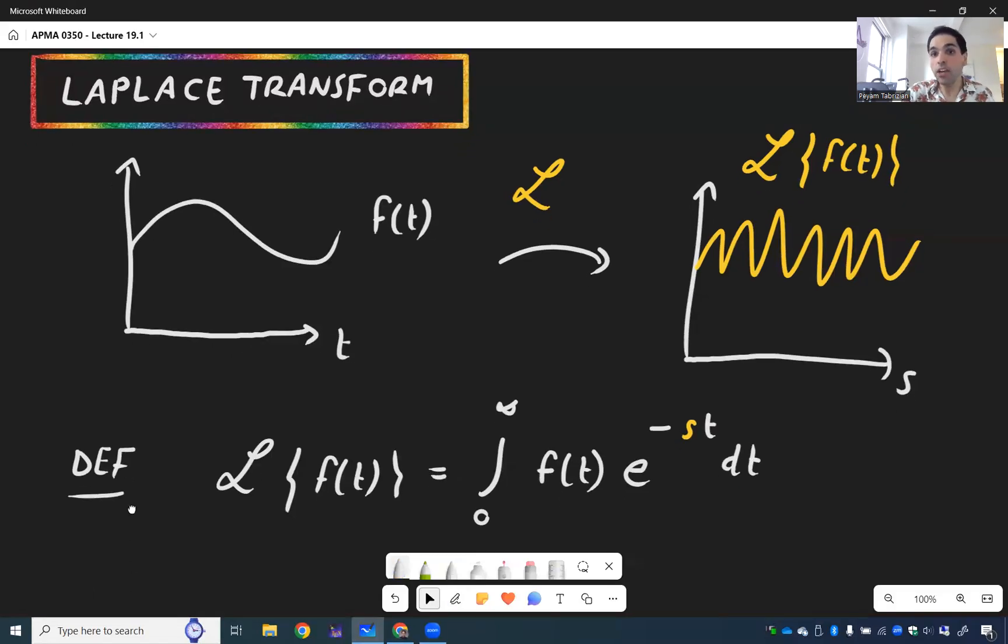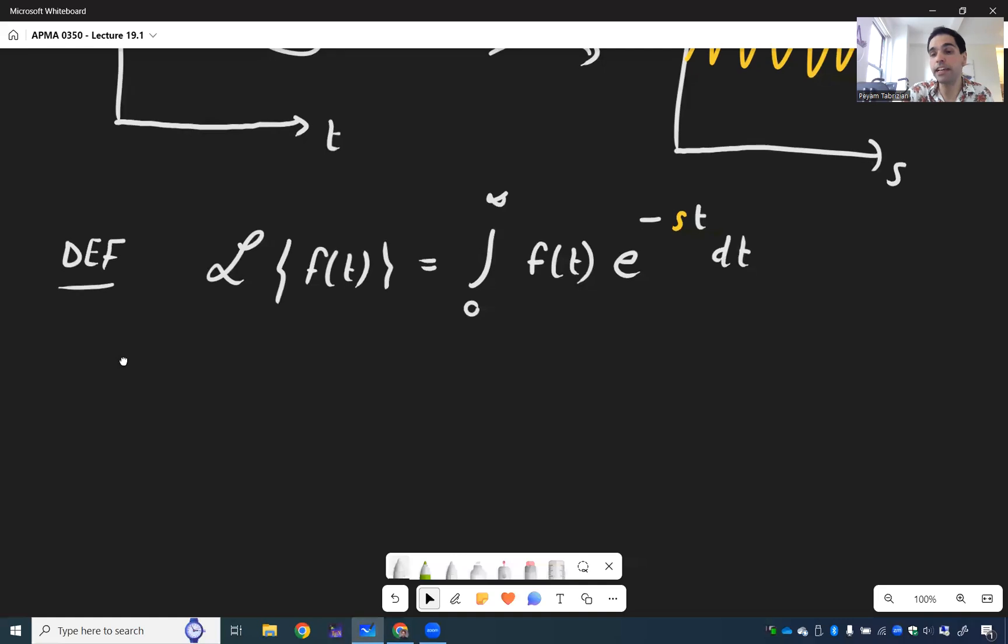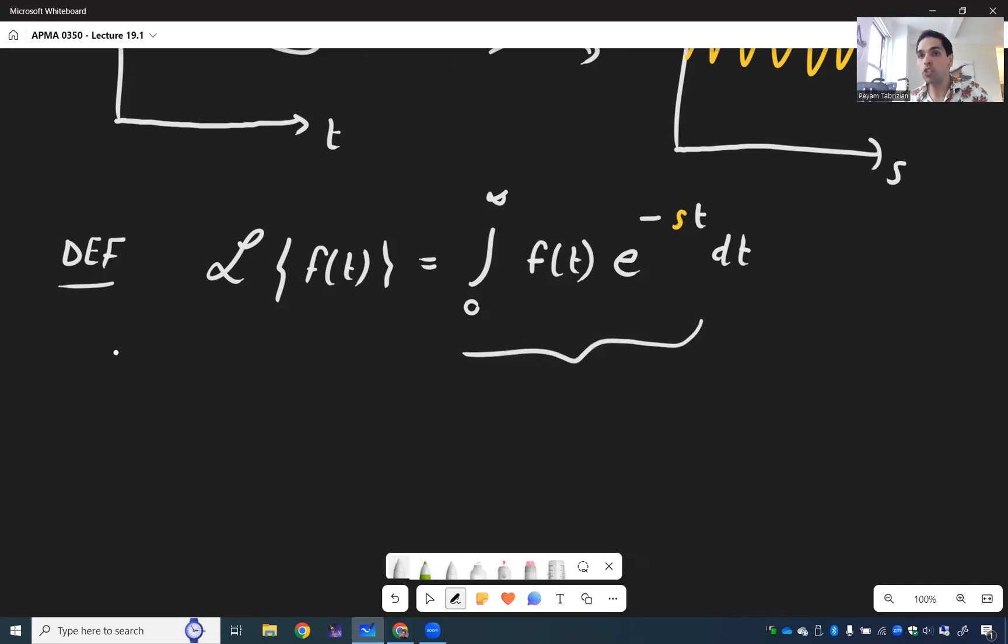Now, I know it looks very complicated, but intuitively, for every s, what you do, you just take the weighted average of f with those functions e to the minus st.